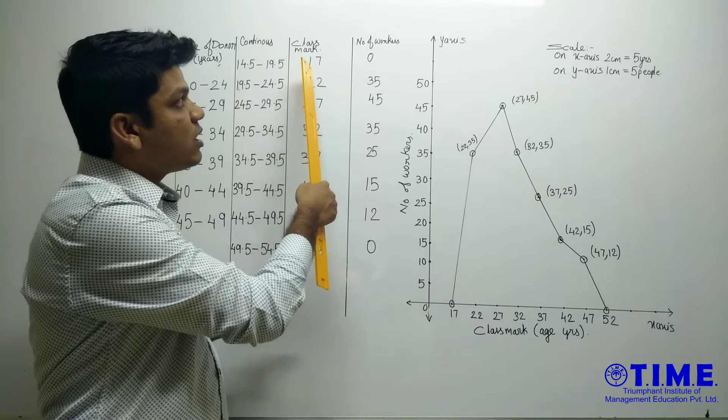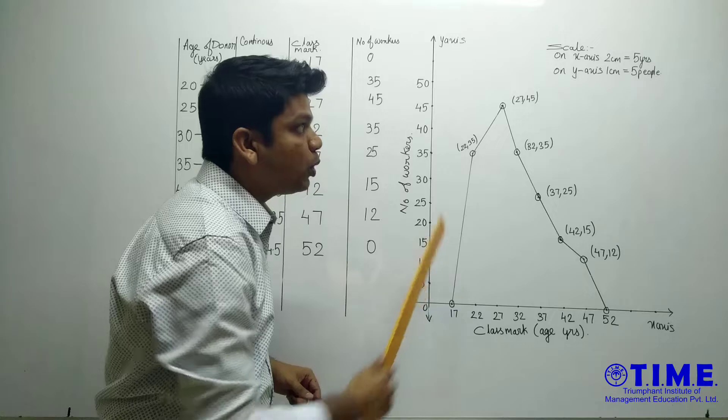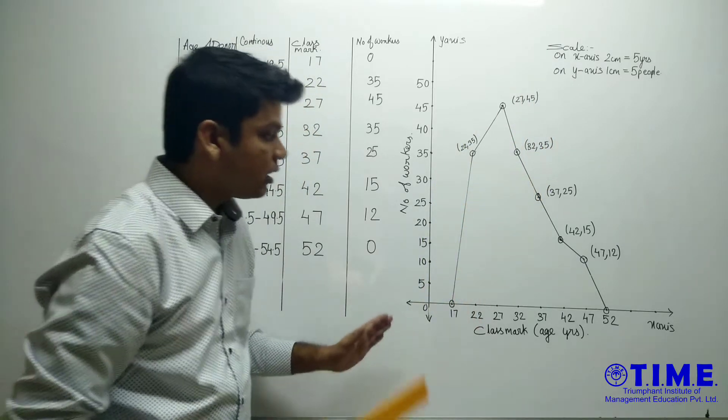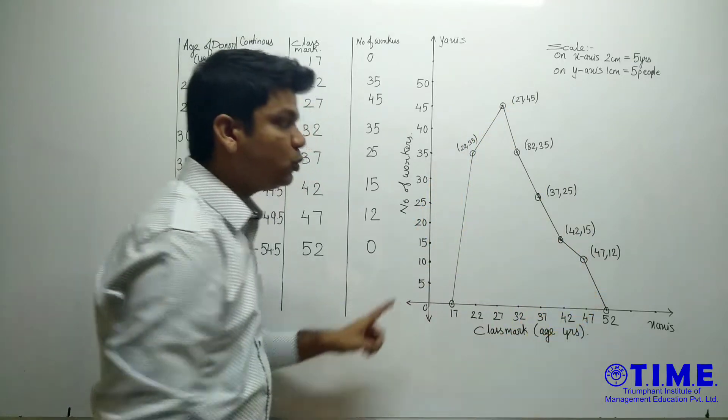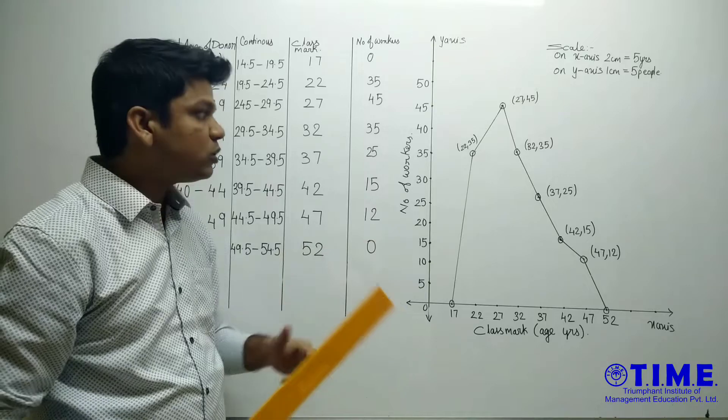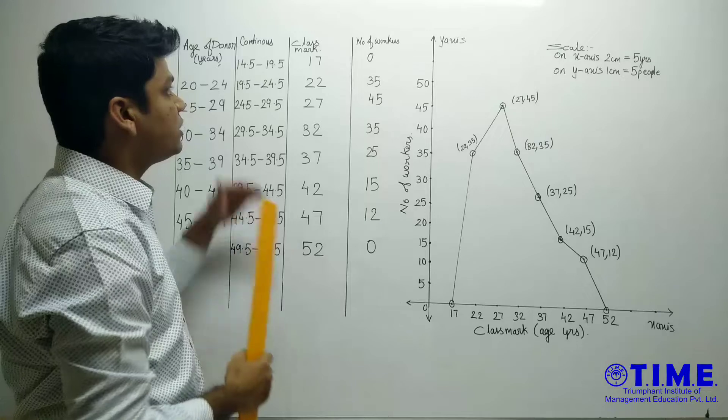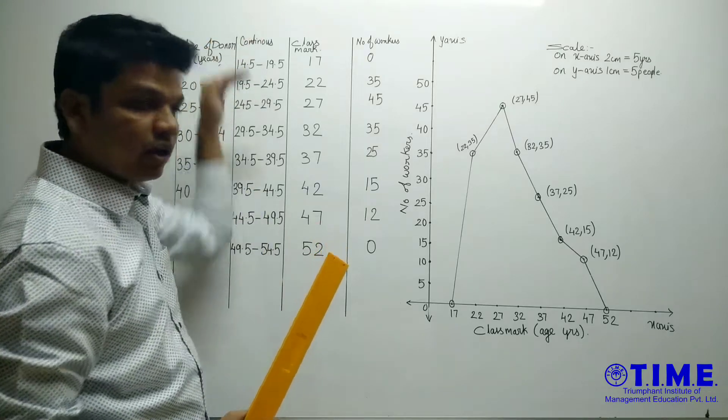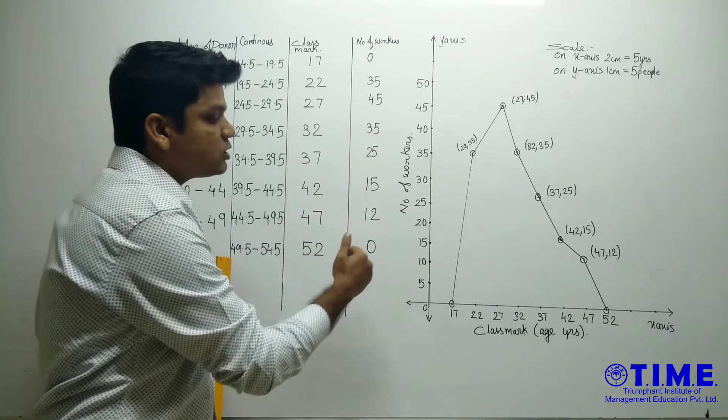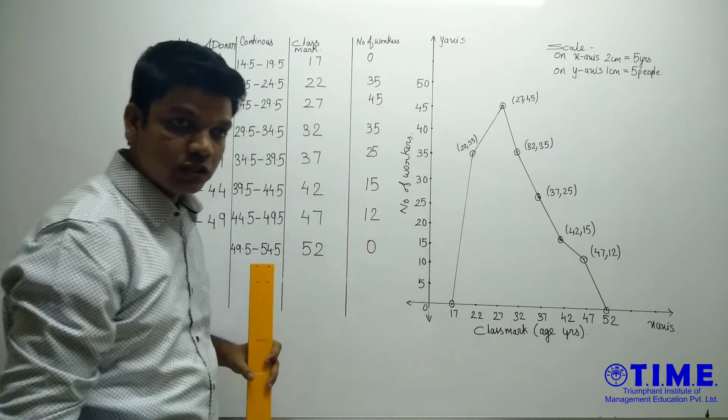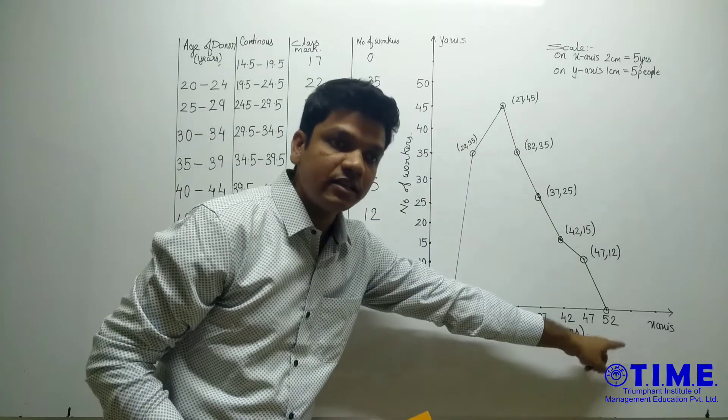Then using class mark as x-coordinate and frequency as y-coordinate, plot the points. After plotting points, you should join those points. You will get a frequency polygon. One more thing, when we draw a frequency polygon and when we make a table, we should take one class prior and one class after the given classes. And the frequency of those classes which we have taken will be zero. That's why frequency polygon starts with zero and ends at zero.